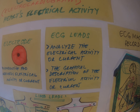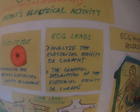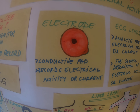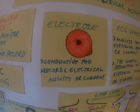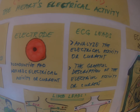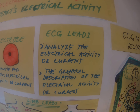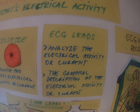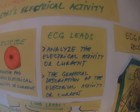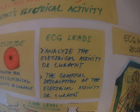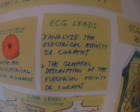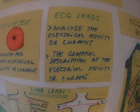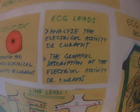What is the role of the ECG leads? Well, if we say that the electrodes will record the electrical activity of the heart, the ECG leads do something more. They will analyze the recorded activity, and the bottom line is we get a graphical description of the electrical activity.